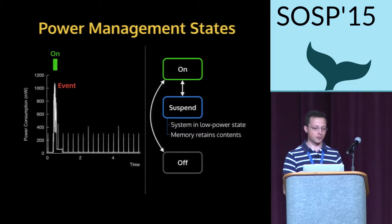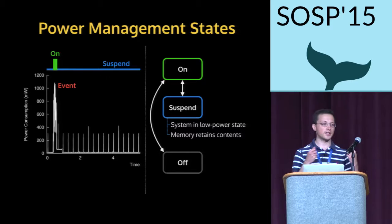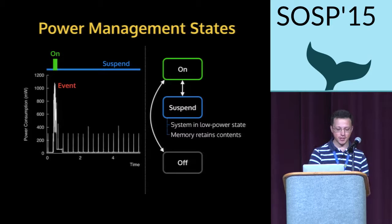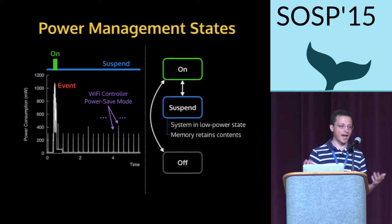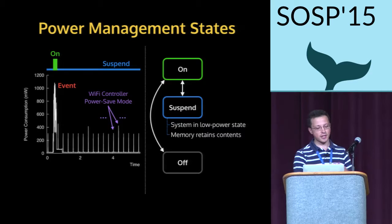At all other times there's limited power consumption, far lower than the power consumed while actually running the event. These two different states correspond to the system switching between two power management states: on and suspend. When the event is running, we're in the on state and actively processing the event. Once the event's handled, the system remains in a suspended state where CPUs are disabled and memory retains its contents. The small periodic peaks visible in the suspend trace are from the Wi-Fi controller, which is active in the background, checking periodically for queued packets at the AP in power save mode.